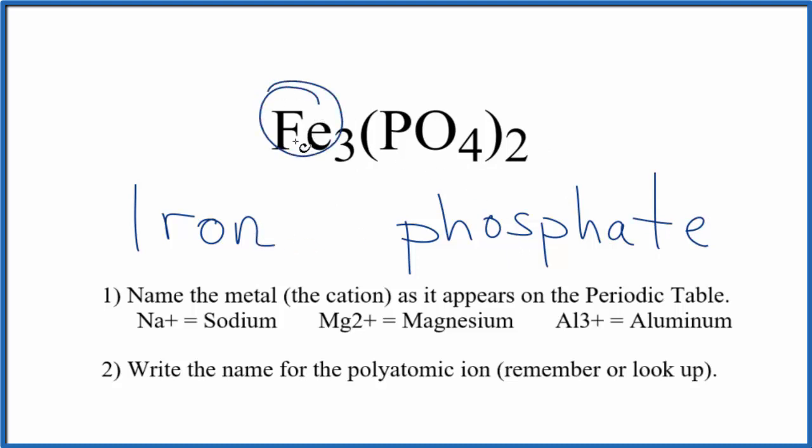But we said that iron is a transition metal. So we've got to figure the charge out on the iron, and we have to look at what it's bonded to to do that. PO₄, the phosphate ion, has an ionic charge, the whole thing here, of three minus.